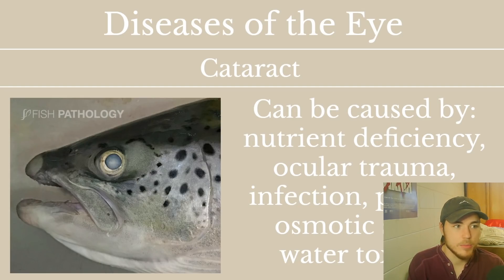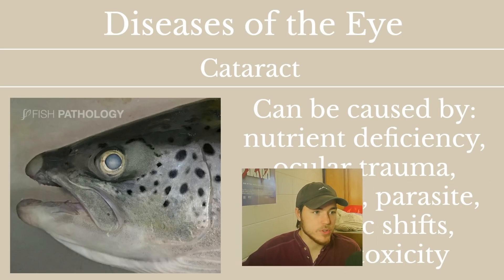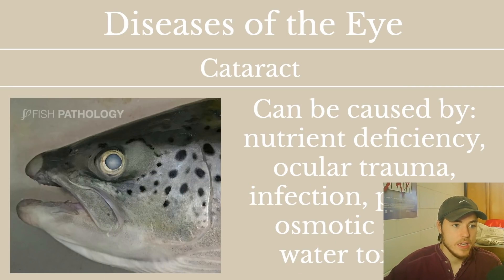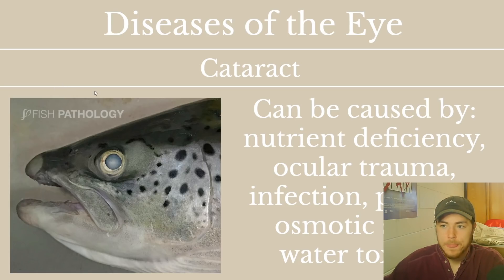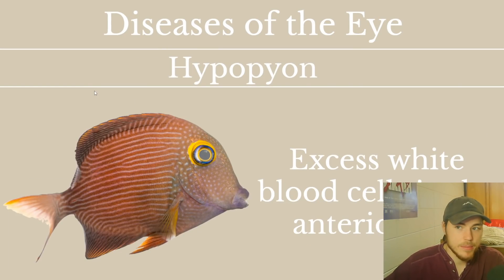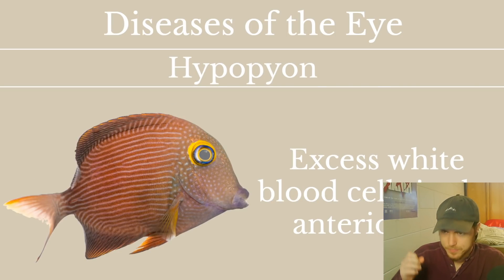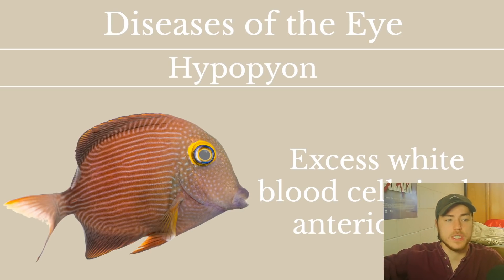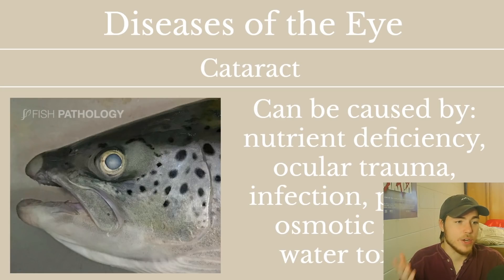Cataracts are something humans get somewhat often and can be caused by a variety of things in fish as well, including nutrient deficiencies, ocular trauma, infection, parasites, osmotic shifts, or water toxicity. If you see a cataract, you can't quite narrow down the cause. To distinguish cataracts from hypopion — since they can both appear as a cloudy eye — hypopion will show clusters because it is white blood cells, whereas a cataract is the eye itself clouding over, giving a clear layer over the eye.